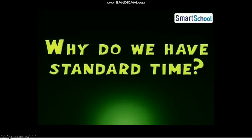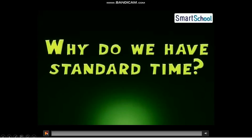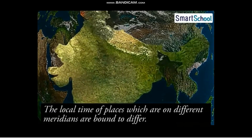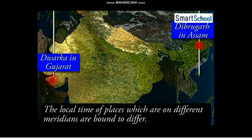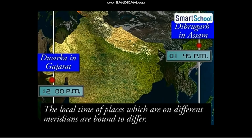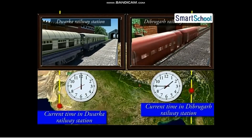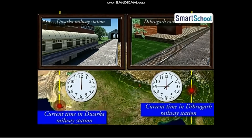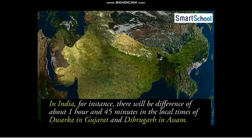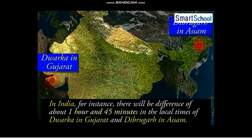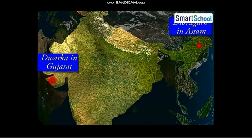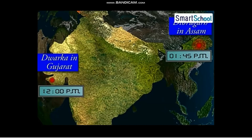Why do we have standard time? The local time of places on different meridians are bound to differ. For example, it would be difficult to prepare a timetable for trains that cross several longitudes. In India, there is a difference of about 1 hour and 45 minutes in the local times of Dwarka in Gujarat and Dibrugarh in Assam. If it is 12 noon in Dwarka, then at the same time in Assam it would be 1:45 pm.